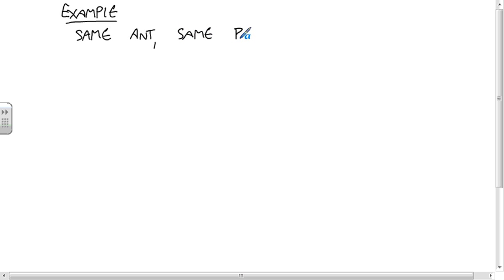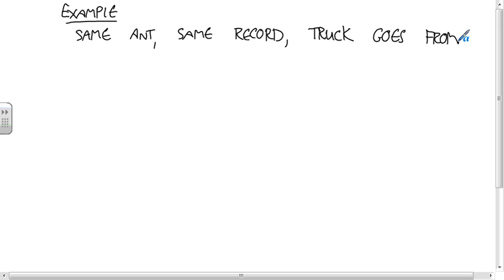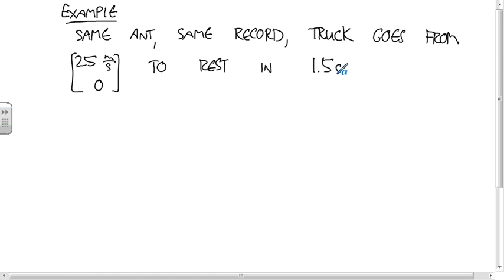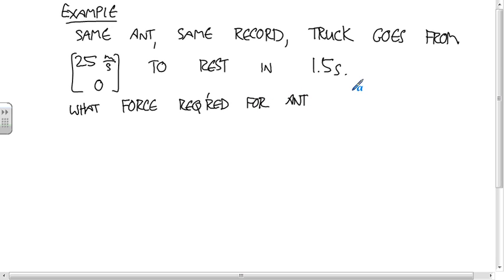Okay, so now — same ant, same record — but the truck hits the brakes and goes from 25 meters per second, zero, to rest in 1.5 seconds. What force is required for the ant not to slip? Take a few minutes and see if you can work through this together.